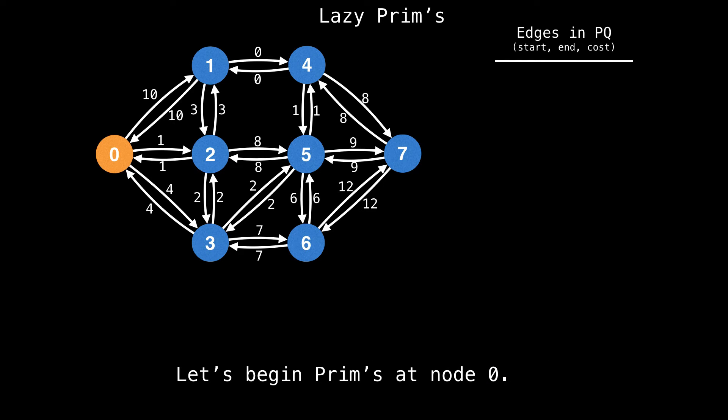So let's begin Prim's on node zero. Iterate over all the outgoing edges and add them to the priority queue. The first edge we're going to add to the priority queue is the edge from zero to one with a cost of 10. Then the edge from zero to two with a cost of one, and finally the edge from zero to three with a cost of four.